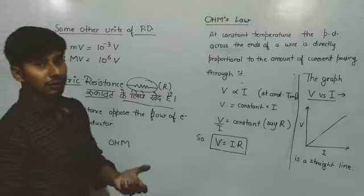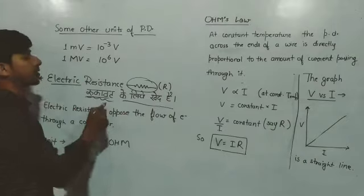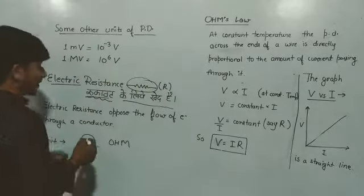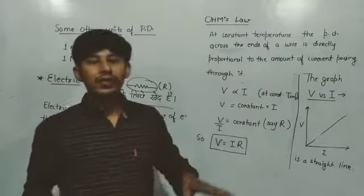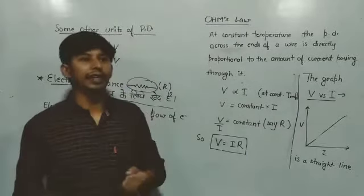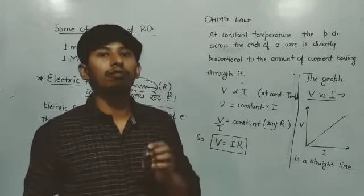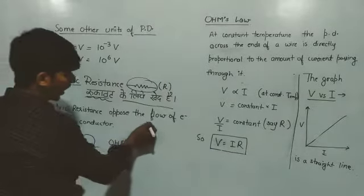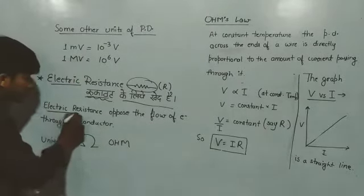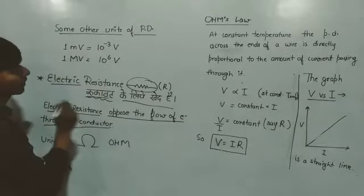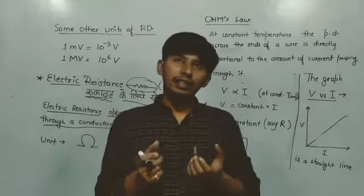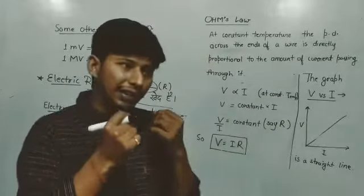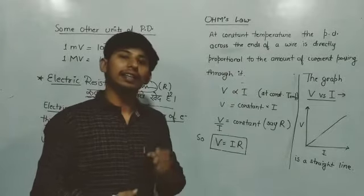Resistance means rukawat, means hindrance. When current flows in a wire, current flow takes place because of the flow of electrons, that I told you in the earlier videos. So electric resistance opposes the flow of electrons. Electric resistance actually, when current flows, the electron flow which is happening, it opposes it. So the hindrance created in the flow of electrons, that is actually electric resistance.